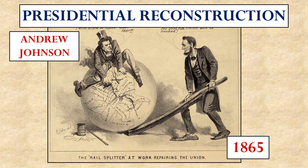Andrew Johnson was the Democrat put on the ticket with Lincoln to provide a unifying ticket for the country in the 1864 election. Andrew Johnson was not nearly the skilled politician that Lincoln was, and his efforts to continue Lincoln's generous sort of Reconstruction — looking at the South as wayward brothers who have come home rather than punishing them as enemies — would be very difficult for him to pull off.